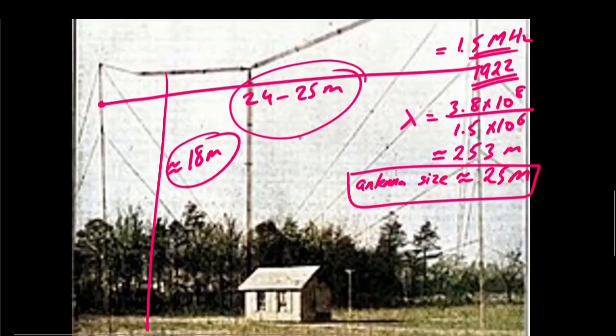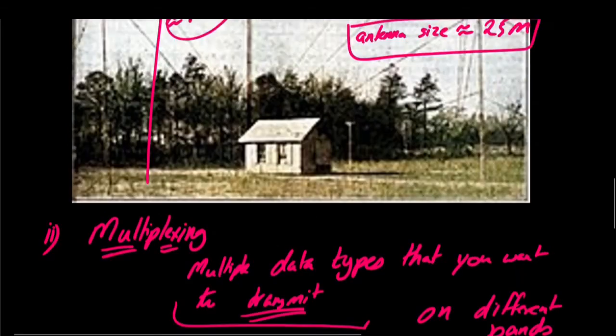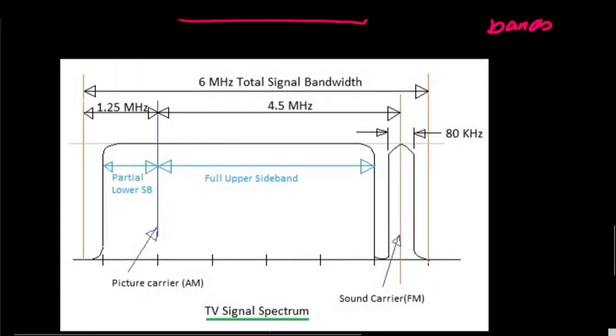Let us move towards the second application and the second use of modulation, and this is basically multiplexing. Now consider that you have multiple data types that you want to transmit. We can arrange these multiple types on different bands.